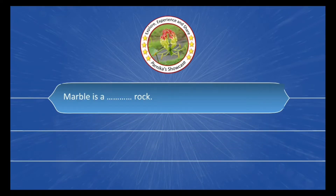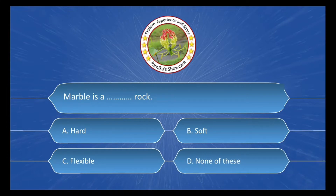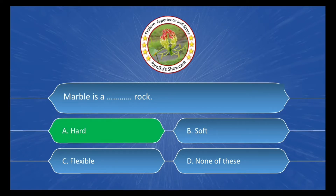Next question: Marble is a dash dash rock, and the options are: A. Hard, B. Soft, C. Flexible, D. None of these. And the correct answer is Option A. Hard.